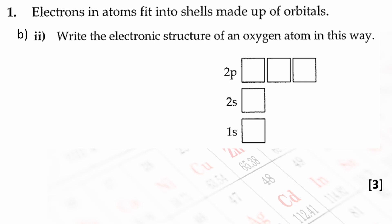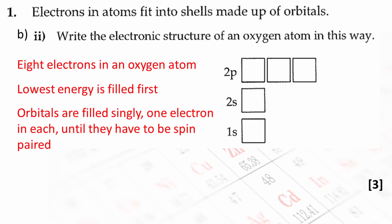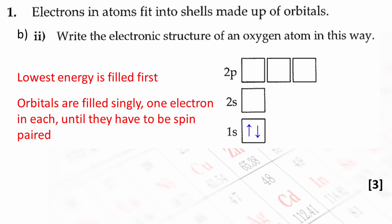Here's the next part of the question. Write the electron structure of an oxygen atom in this way. Use your data sheet to find that eight electrons exist in each oxygen atom. The lowest energy is filled first. Orbitals are filled singly, one electron in each, until they have to be spin paired. I've put the first two electrons in the lowest energy orbital. One arrow points up and the other points down. This shows that the electrons have opposite spin. I have used double-headed arrows. The 2S subshell is filled next. A single electron is added to each orbital of the P subshell until there are no more empty 2P orbitals. The final electron is spin paired and the diagram is now complete.